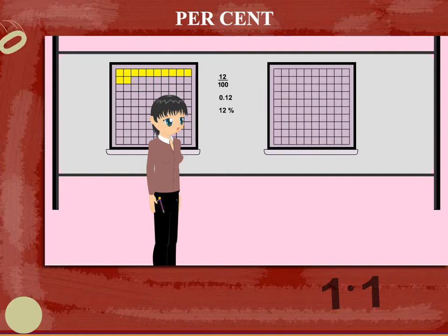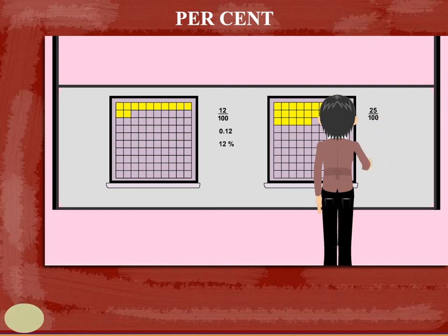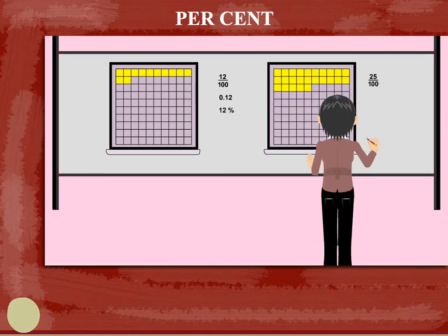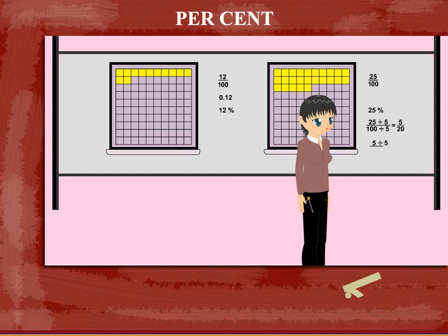Nancy ma'am has another check square with 25 colored squares out of 100. This is 25 upon 100 or 25%. The equivalent fraction of 25 upon 100 is 5 upon 20, which is equal to 1 upon 4.